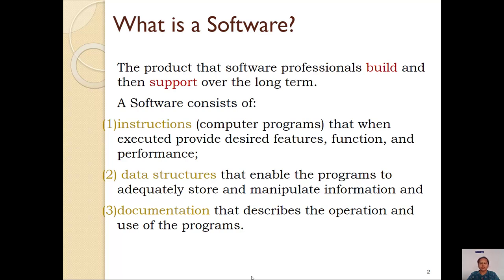The second part is that a software consists of data structures. Whenever you are making use of a program you need to perform some operations, and you need some data for those operations. All this data needs to be stored somewhere, and for that we make use of data structures. So generally a software makes use of some data structure which enables the program to adequately store and manipulate the information. The third part is documentation. Documentation is the one which describes how the software is to be used and what the software is going to perform — it describes the operation and the use of the programs.